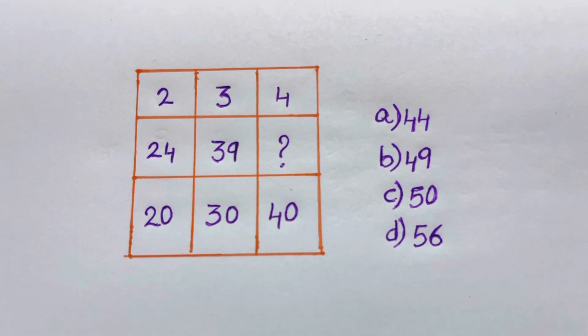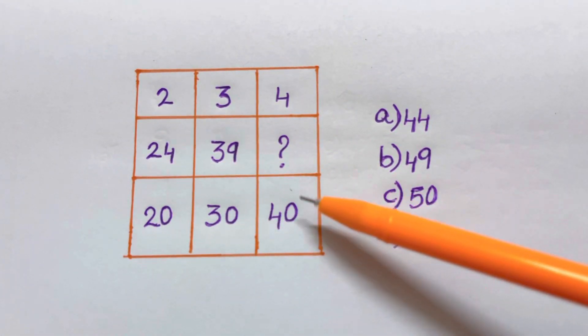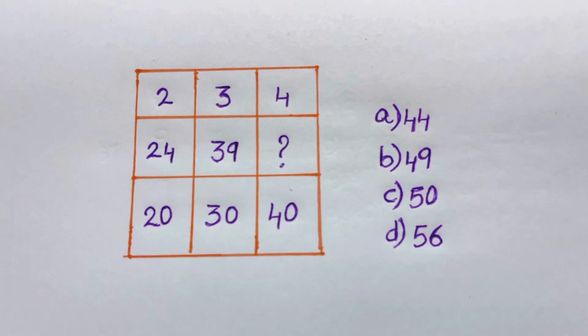Okay, so we have a puzzle here. Two, three, four in the top row, and the numbers 24, 39 in the middle row, and 20, 30, 40 in the bottom row. You have to find the missing number which is going to replace the question mark. So your time starts now, you only have 10 seconds to answer this question.